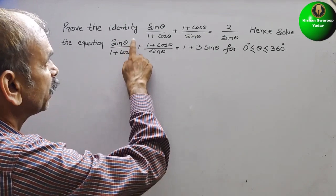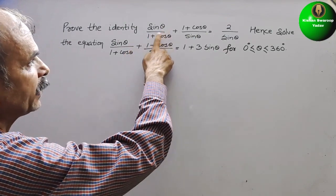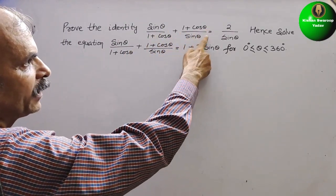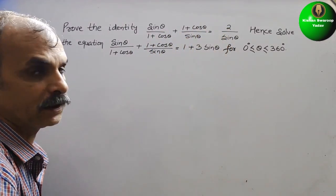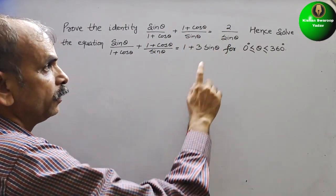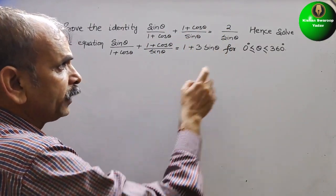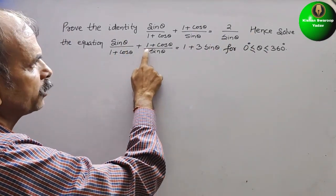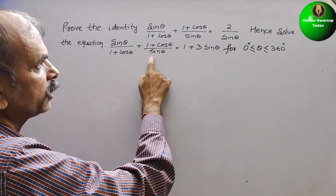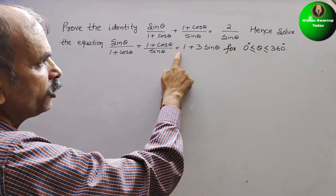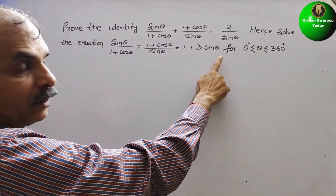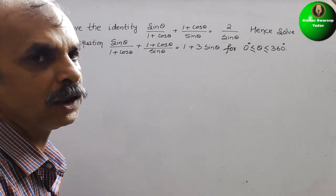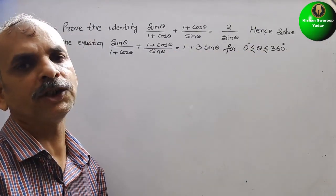The question is: prove the identity sinθ/(1 + cosθ) + (1 + cosθ)/sinθ = 2/sinθ, and solve the equation sinθ/(1 + cosθ) + (1 + cosθ)/sinθ = 1 + 3sinθ for 0° ≤ θ ≤ 360°.